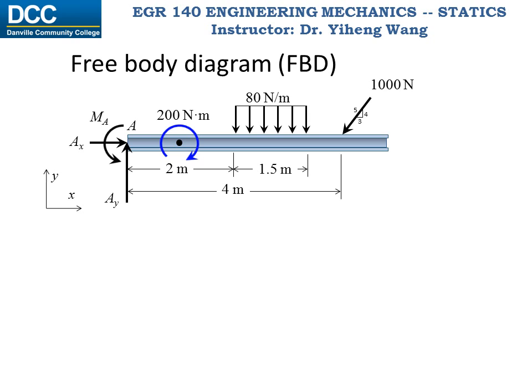Now the free body diagram is complete, and we have exactly three unknowns: Ax, Ay, and Ma. Therefore, we can write three equilibrium equations to solve for all of them. The first equation is the resultant force along the x-direction, which equals our unknown force Ax minus the x-component of the 1000 N force, and it equals zero. Note that you must write the equation according to the coordinate system you set up. Here, right is the positive x-direction, so force Ax is positive and the (3/5) × 1000 N term is negative.